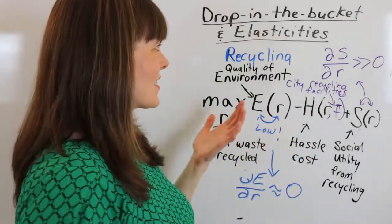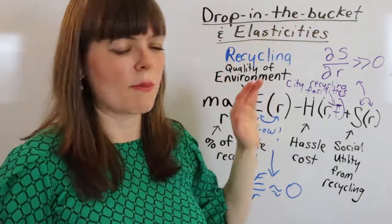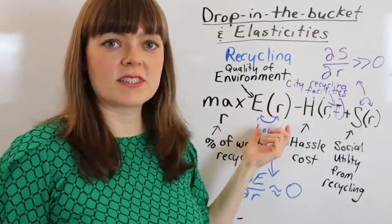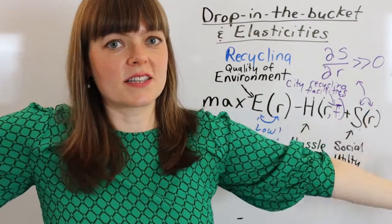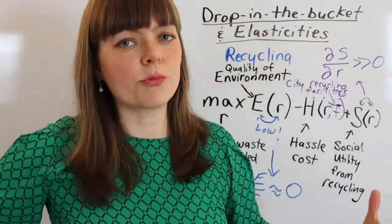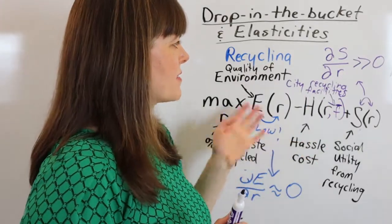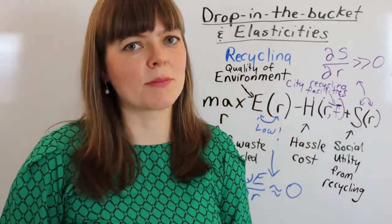So this is just a classic example of a drop in the bucket problem where a drop in the bucket has to do with the elasticity being close to zero for an individual, even though the elasticity with respect to the whole group is large. And the government just has to think about creative ways of solving a public goods problem like this one.